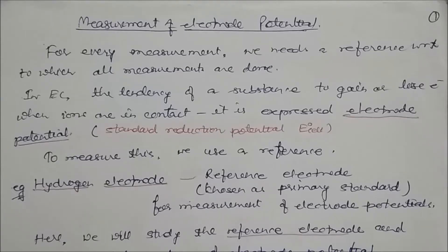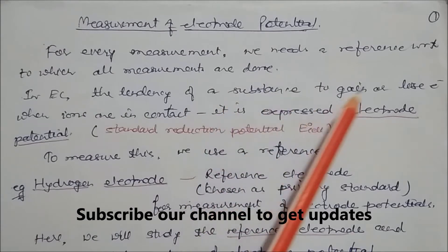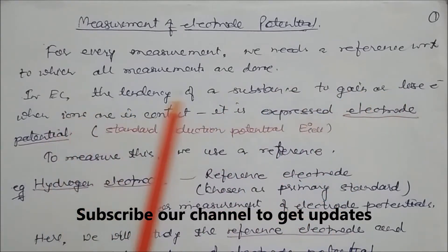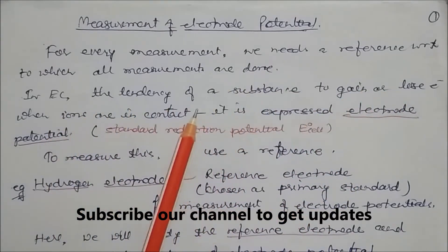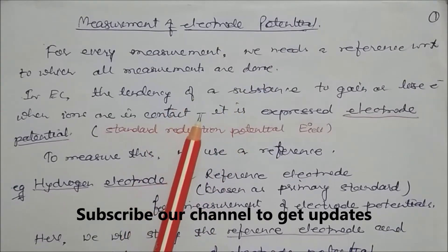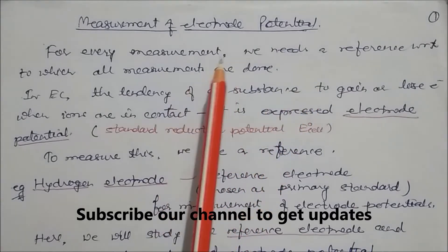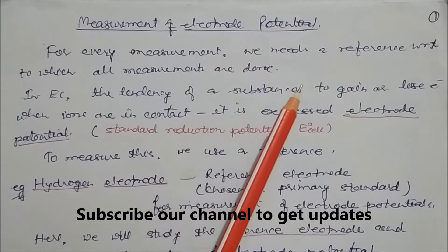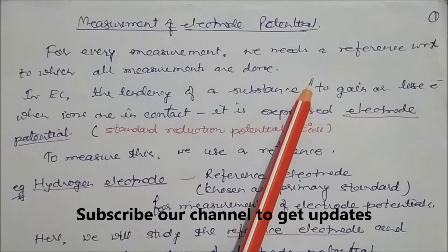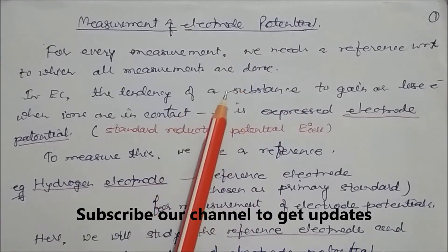Hello my friends, today we are going to learn how to measure the electrode potential. We know that for every measurement we need a reference with respect to which all measurements are done — like for measuring distance we require meters, for measuring time we require seconds. Similarly, to measure electrode potential we require one reference, so that with its help we can measure any potential.